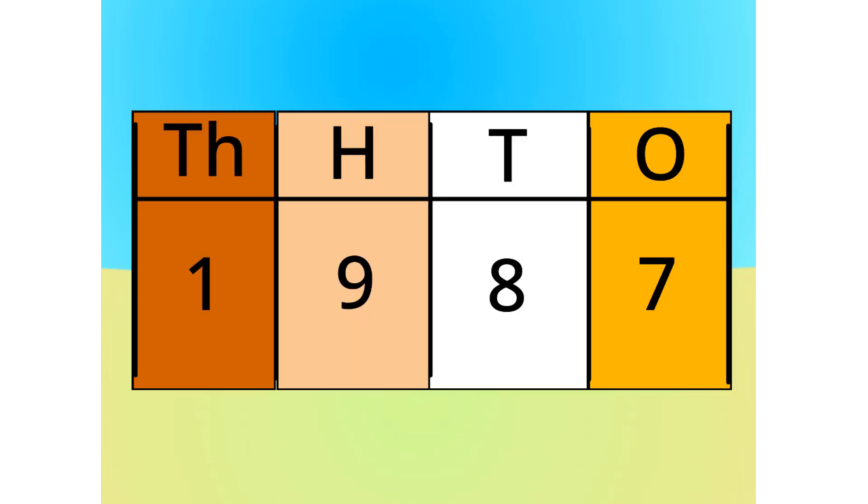Alright, let's split it into its units. This number is made up of 1,000, 900s, 8, 10s, and 7, 1s. See?